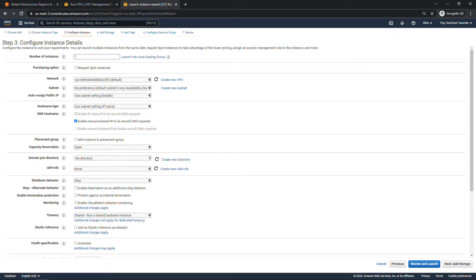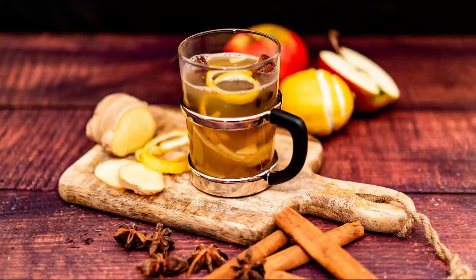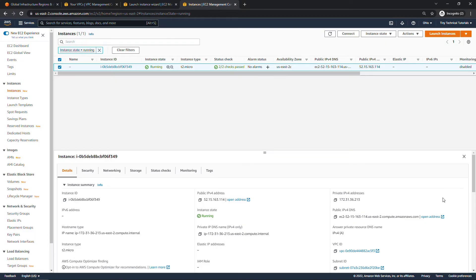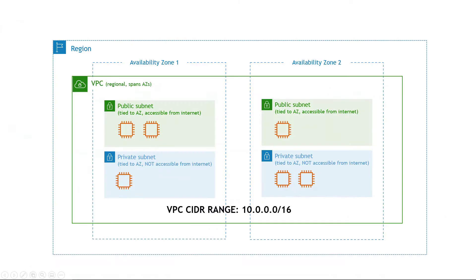Now let's talk about CIDR — Classless Inter-Domain Routing, which some people pronounce as CIDR or even CIDR. This is the notation used for describing blocks of IP addresses. An IP address is kind of like your home address but for a computer — it tells the world where to find you. In the console, here's an EC2 instance with an IP address of 172.31.36.213. This IP address comes from our CIDR block, which is assigned at the VPC level.